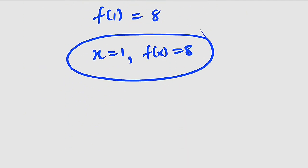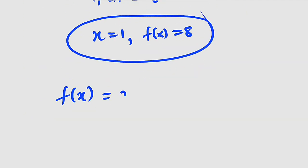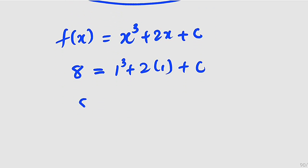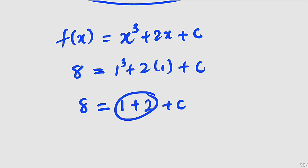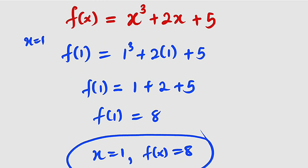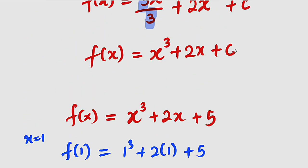We have f of x equal to x to the power of 3 plus 2x plus c. We are going to substitute this condition: f of x is 8, so we have 8 equal to 1 to the power of 3 plus 2 times 1 plus c. This gives us 8 equal to 1 plus 2 plus c, which is 3 plus c. We have 8 minus 3 equal to c, and 8 minus 3 is 5. Hence c is equal to 5, which you can substitute back — but only if an initial condition is given. If not, you leave it as plus c.